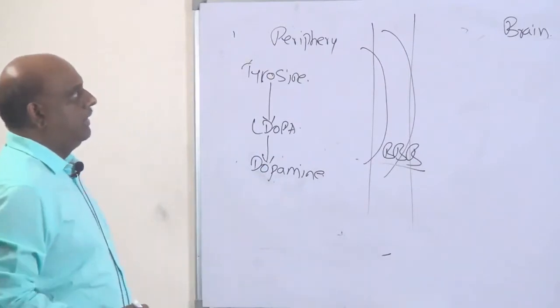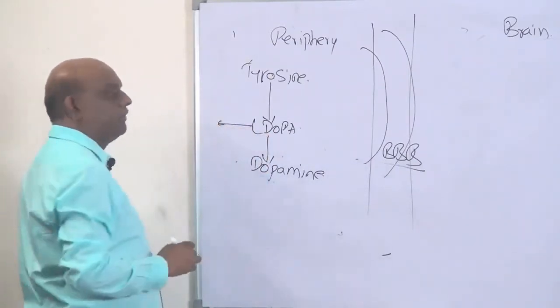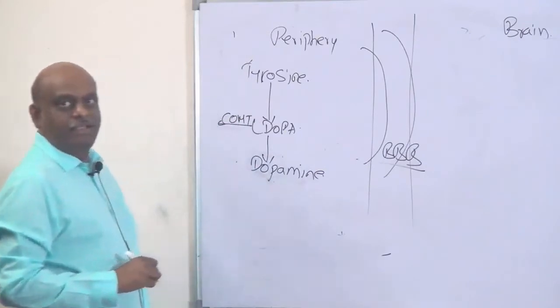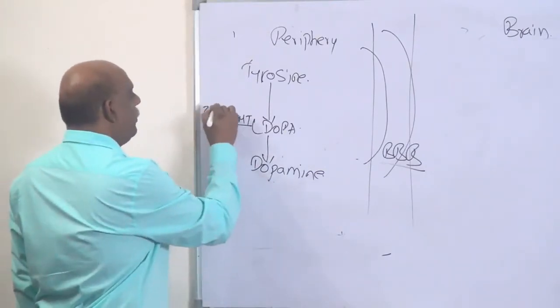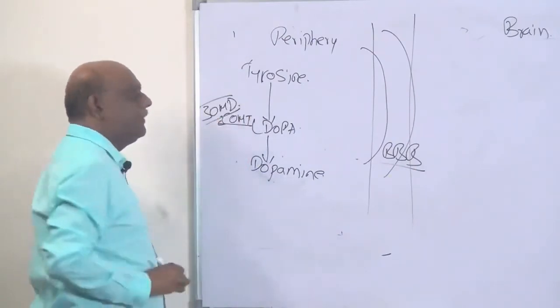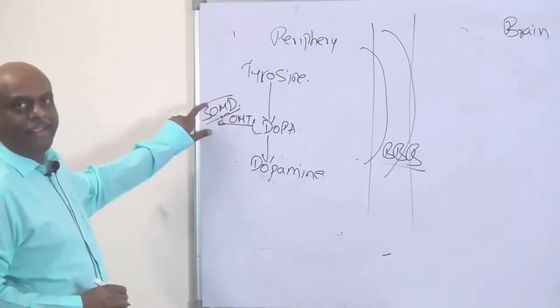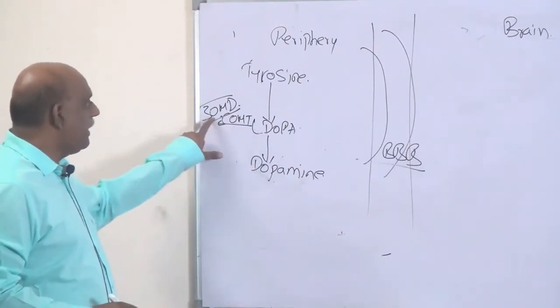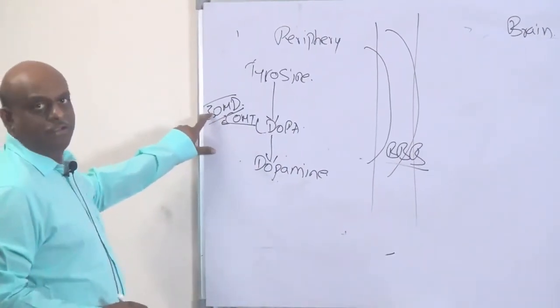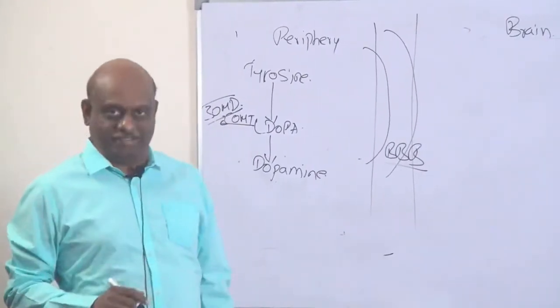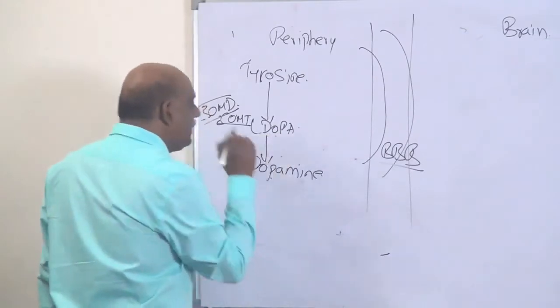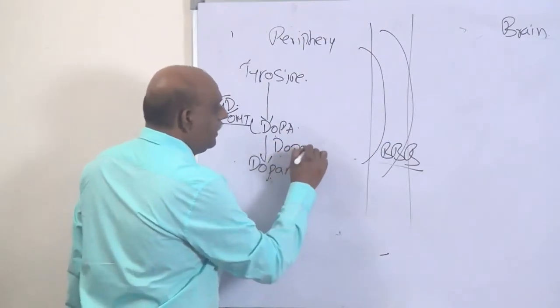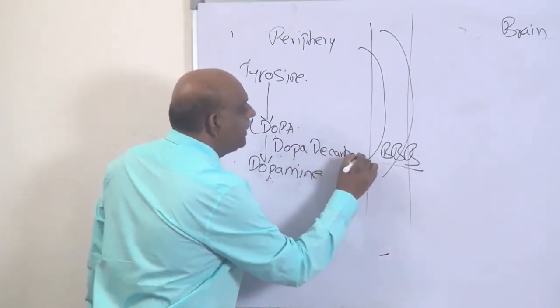Now this L-dopa will also be metabolized by one enzyme called catechol-O-methyltransferase, and that converts it into 3-OMD, methyldopa. It is an ineffective metabolite. So COMT's main role is to make L-dopa become ineffective. That is the whole idea of COMT. It metabolizes it. So what is that enzyme which converts L-dopa into dopamine? You call it dopa decarboxylase.